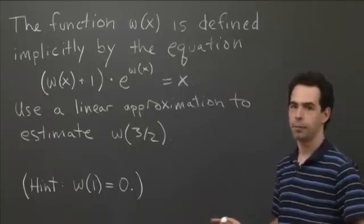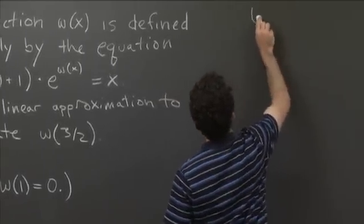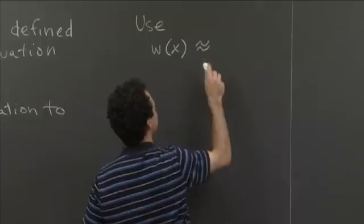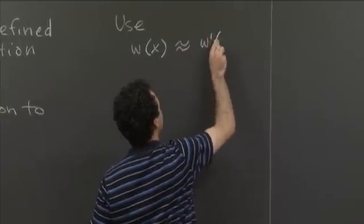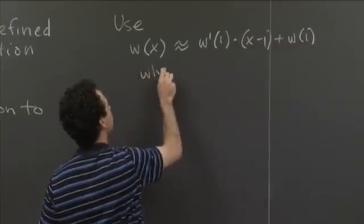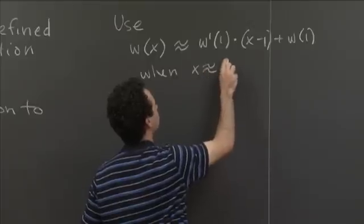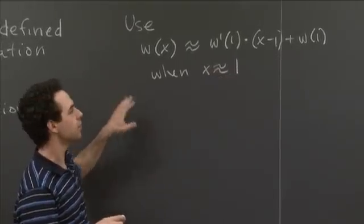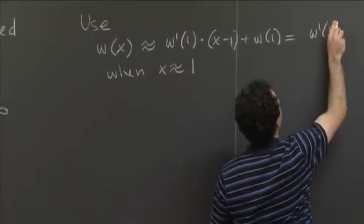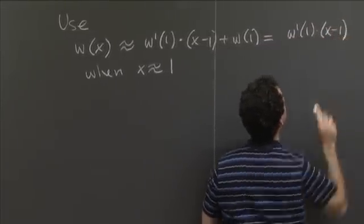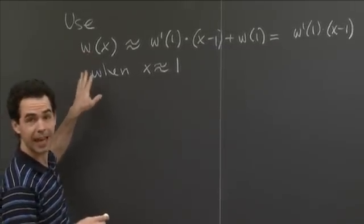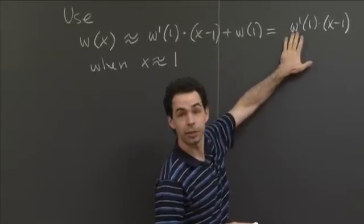We're going to use the linear approximation w(x) ≈ w'(1) · (x − 1) + w(1). Since w(1) = 0, that term goes away. So in order to estimate w(x), and in particular w(3/2), what we need to know is the derivative of w.